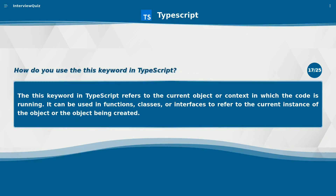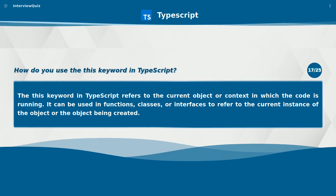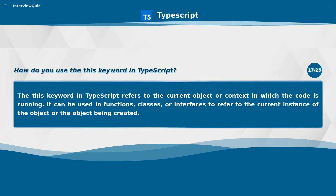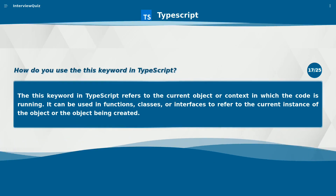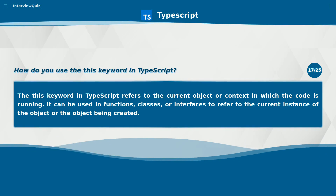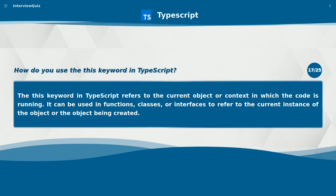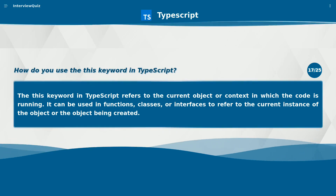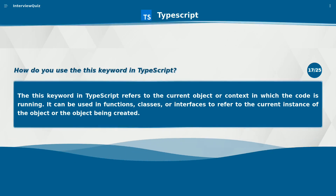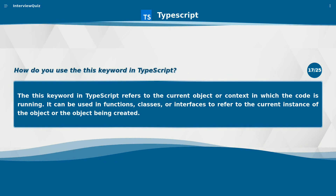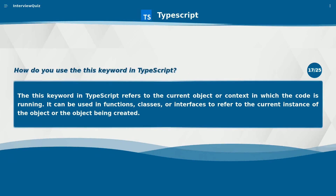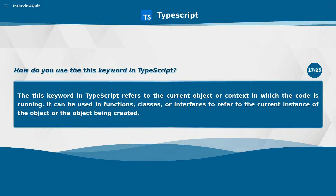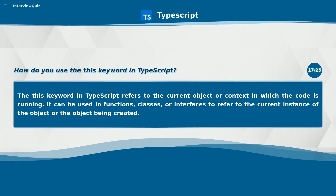How do you use the this keyword in TypeScript? The this keyword in TypeScript refers to the current object or context in which the code is running. It can be used in functions, classes, or interfaces to refer to the current instance of the object or the object being created.